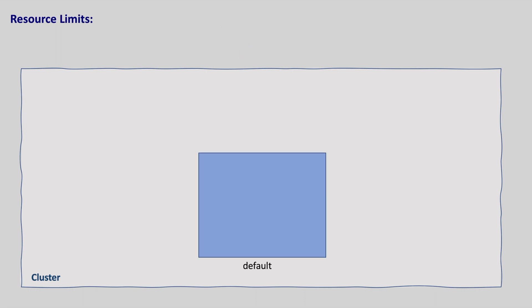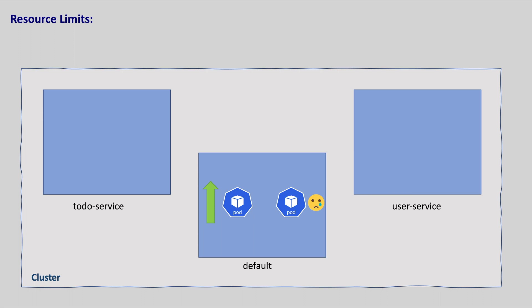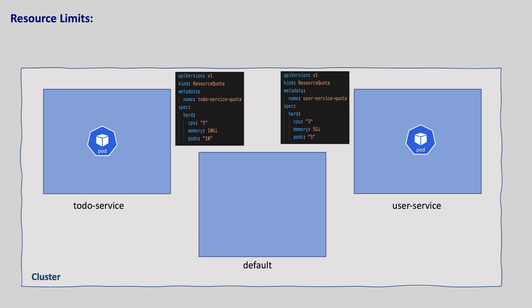Namespaces also help us in limiting the resources for different applications. Let's say we have two teams deploying their applications in the same namespace. Because of memory leaks, app one started using more and more memory, and app two becomes slow because of less memory available. This can be avoided with namespaces — we can run these two apps in different namespaces by defining resource quotas for CPU and memory utilization. This ensures that every project or namespace has the resources it needs. If you remember, we already looked at one namespace in the ingress session, where all resources related to nginx ingress are created in a separate namespace.